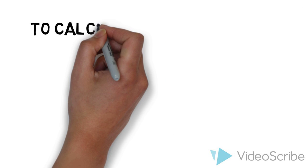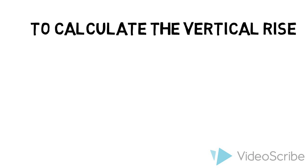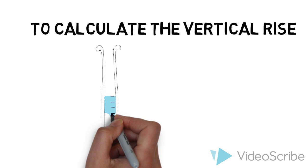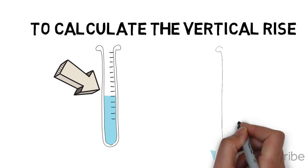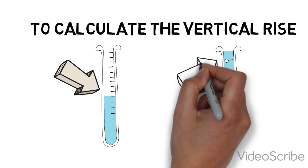To calculate the vertical rise, you need to determine how many feet your water will have to travel upward before gravity takes over. Simply take the lowest point the water sits and subtract it from the highest point.